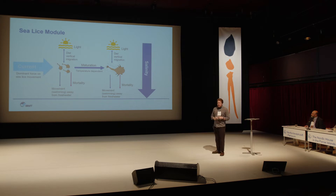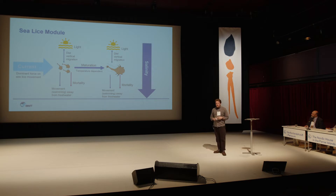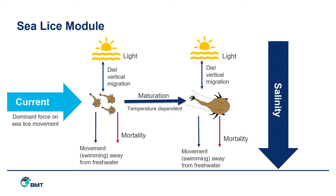Within our integrated model, we have a sea lice model. This allows the behavioural characteristics and physical influences that affect the dispersal of sea lice to be included in the model. This includes the currents that disperse the sea lice, the life stages of the sea lice exhibiting different characteristics, changes in temperature, diel vertical migration — when the sun comes up, sea lice go down — and natural mortality as well as changes to salinity.